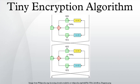In cryptography, the Tiny Encryption Algorithm is a block cipher notable for its simplicity of description and implementation, typically a few lines of code. It was designed by David Wheeler and Roger Needham of the Cambridge Computer Laboratory. It was first presented at the Fast Software Encryption Workshop in Leuven in 1994 and first published in the proceedings of that workshop. The cipher is not subject to any patents.